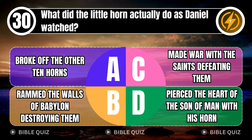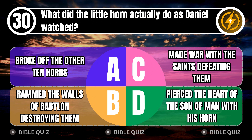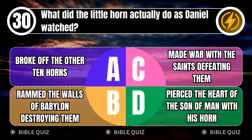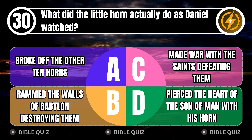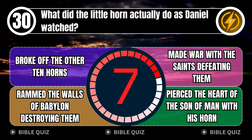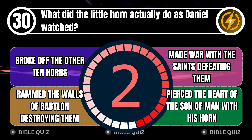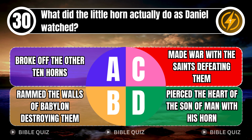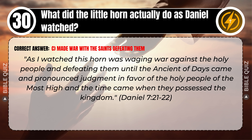Question 30: What did the little horn actually do as Daniel watched? A. Broke off the other ten horns. B. Rammed the walls of Babylon, destroying them. C. Made war with the saints, defeating them. D. Pierced the heart of the son of man with his horn. Correct answer: C. Made war with the saints, defeating them. As I watched, this horn was waging war against the holy people and defeating them, until the Ancient of Days came and pronounced judgment in favor of the holy people of the Most High, and the time came when they possessed the kingdom. Daniel 7 verses 21–22.